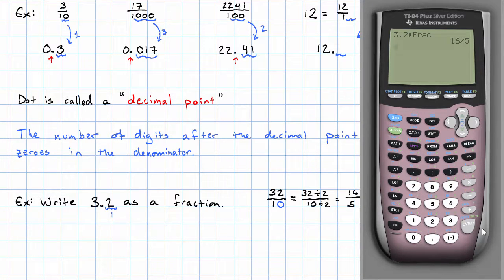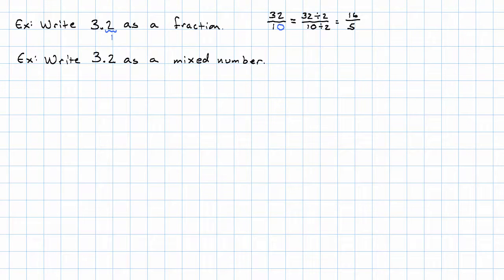We can also go to a mixed number. Now, remember when we went to a fraction, we saw that 3.2 is 32 tenths. If we wanted to make that into a mixed number by hand, we would just take 32 divided by 10. 10 goes into 32 three times with two left over. So this is just 3 and 2 tenths.